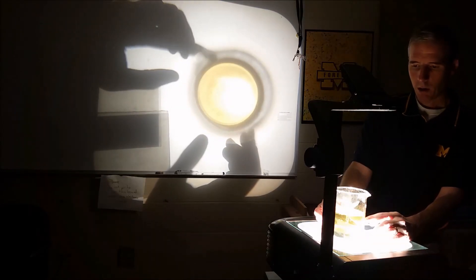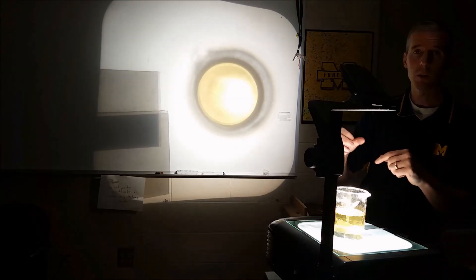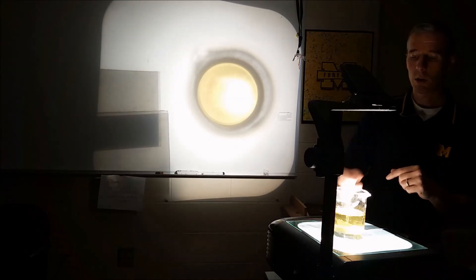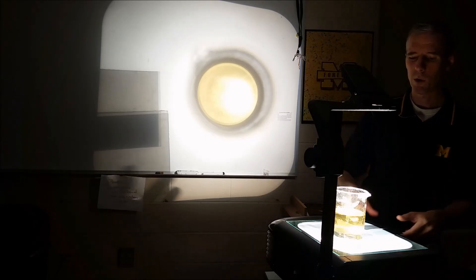Corn syrup is essentially a sugar solution, and some of the carbon atoms in here have four different things attached, and that will cause this to influence the plane of polarized light and actually rotate it.